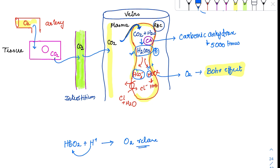Now what happens to the bicarbonate? The bicarbonate is transported mostly in the plasma, not inside the RBC — but it is formed inside the RBC. To bring it to the plasma, there is an exchanger called the bicarbonate exchanger, also called the anion exchanger. This exchanger brings bicarbonate out to the plasma while sending chloride ions inside — both are anions being exchanged.